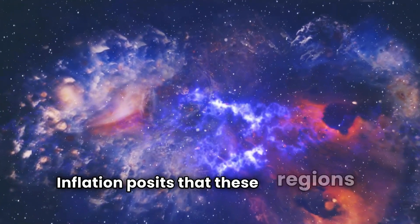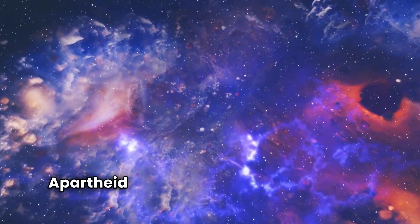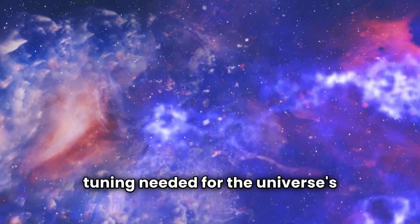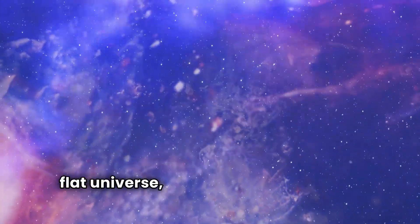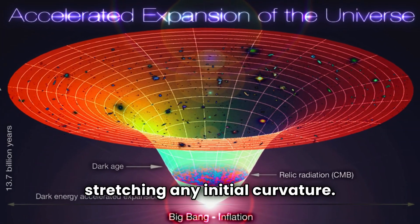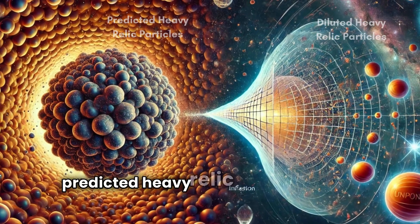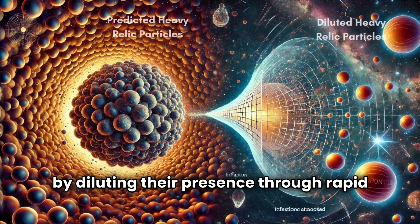Inflation posits that these regions were once close together before being rapidly stretched apart. The flatness problem concerns the fine-tuning needed for the universe's expansion rate and gravitational pull to result in a flat universe, which inflation naturally explains by stretching any initial curvature. The monopole problem involves the absence of predicted heavy relic particles, which inflation addresses by diluting their presence through rapid expansion.